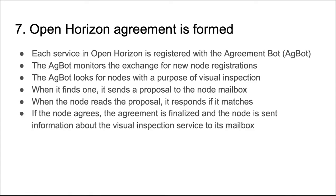Seventh, the Open Horizon management hub agreement bot service monitors for newly registered nodes, looking for those that match the service's constraint of purpose equals visual inspection. When it finds a match, it enters into negotiation. When and if that negotiation is successfully completed, the smart camera device is sent information about the visual inspection service.